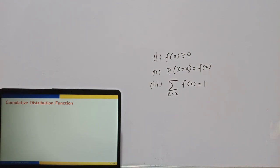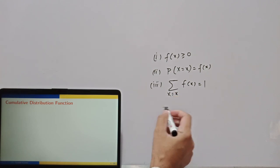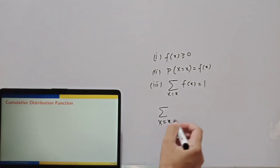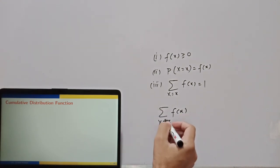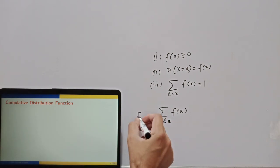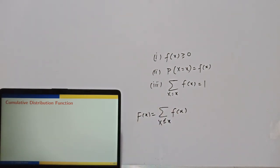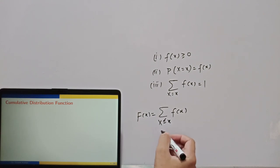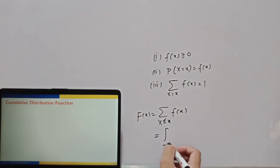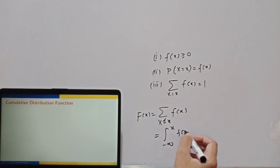Next, the cumulative distribution function (CDF). In the discrete case, the CDF is the sum of probabilities up to x, denoted F(x). In the continuous case, instead of summation, it becomes an integral: F(x) equals the integral from minus infinity to x of f(x) dx.